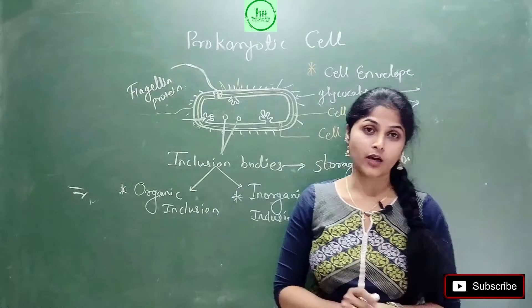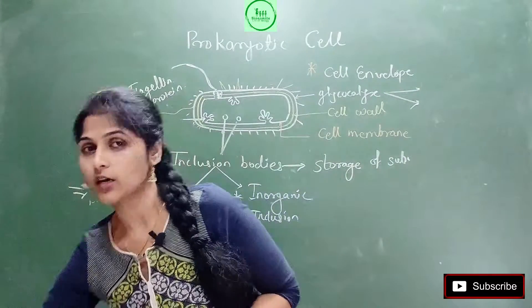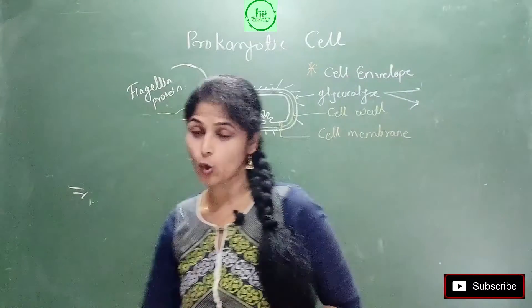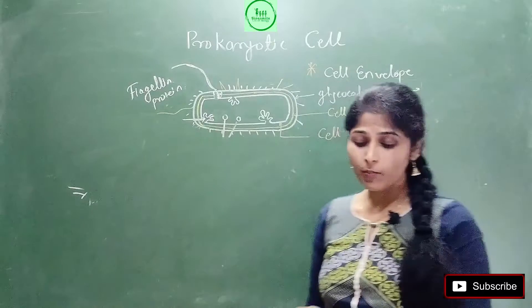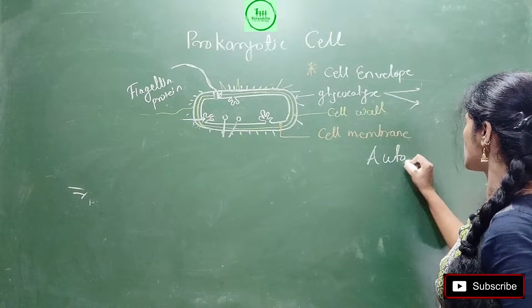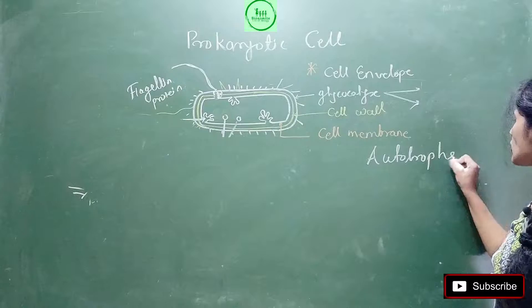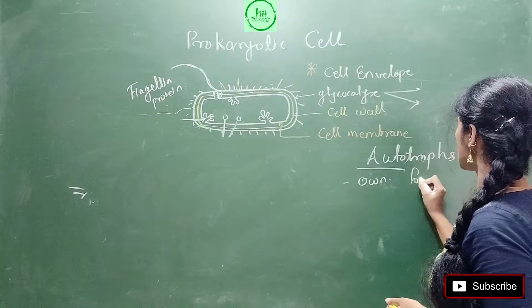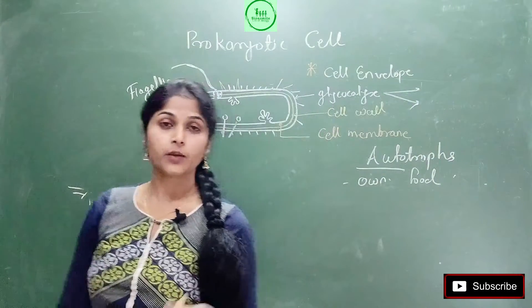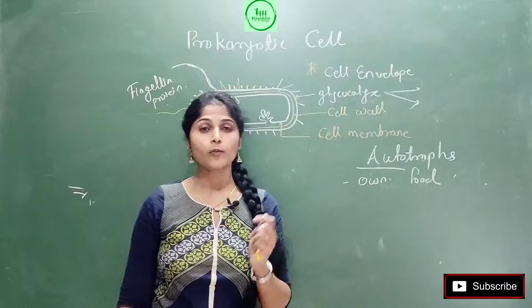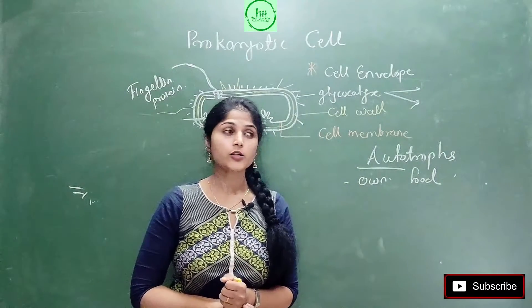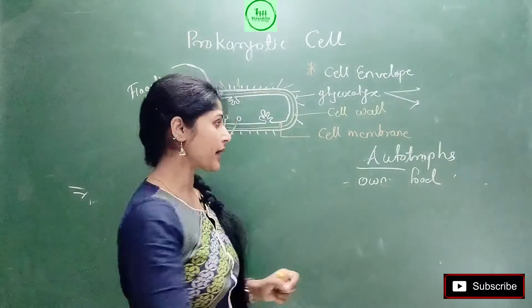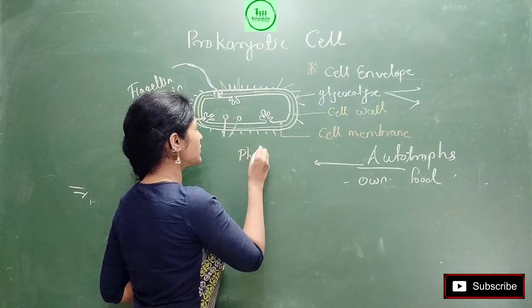Now see, we know about autotrophic living organisms. We know that living organisms who can synthesize their own food are called autotrophs. What are the examples of autotrophs? Let's break the term. Auto - what does it mean? Own. The one who produces their own food, those are called autotrophs. Plants are autotrophs. What about bacteria? See, there are some bacteria who are autotrophic in nature.